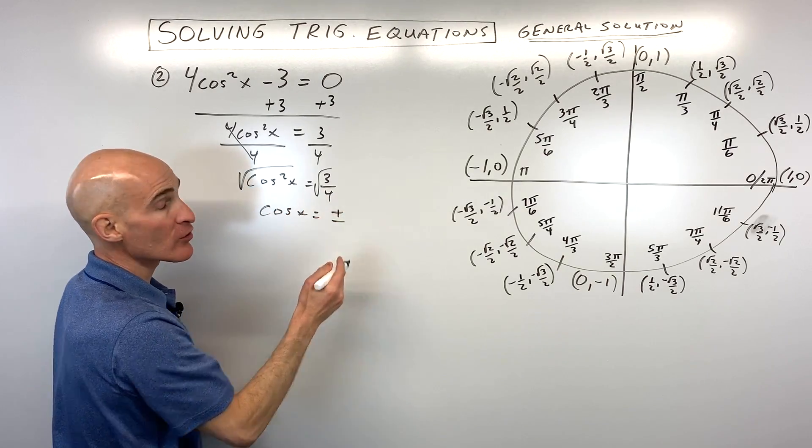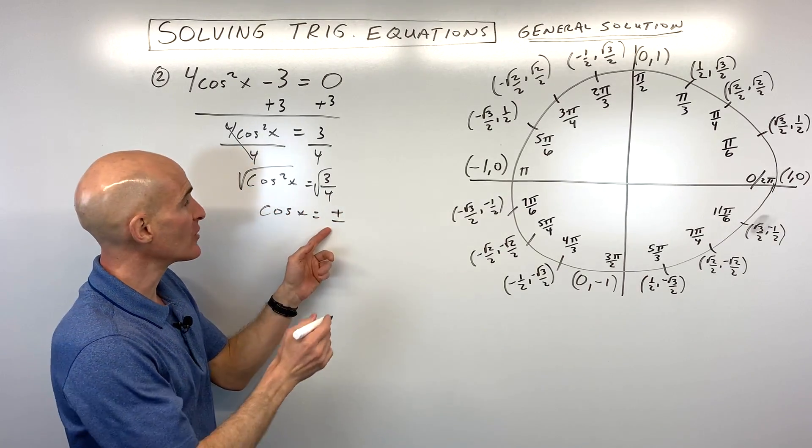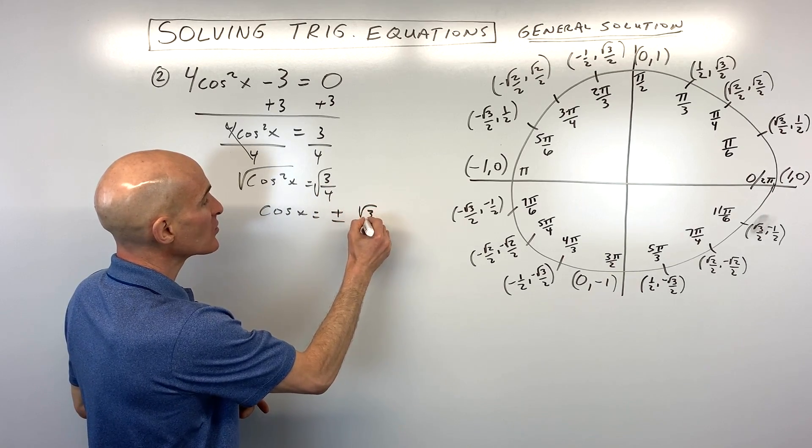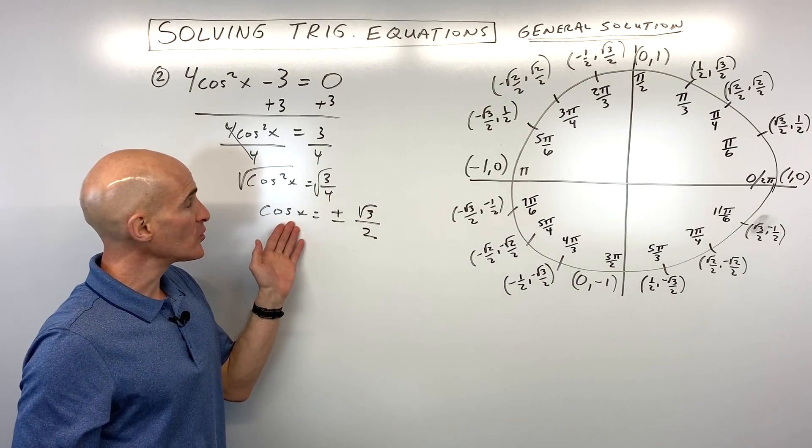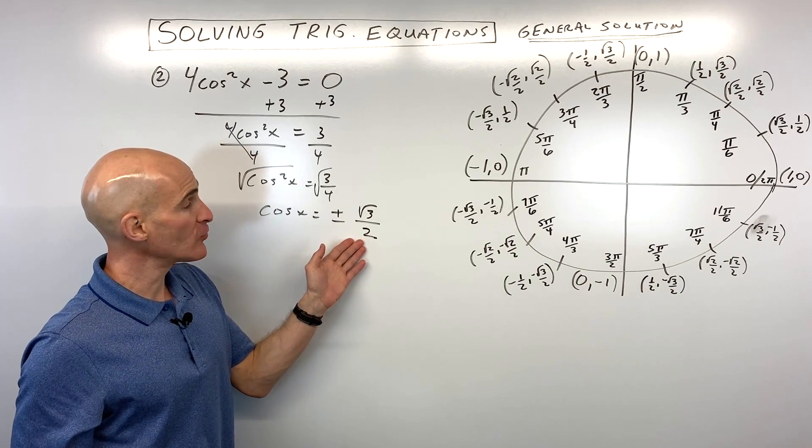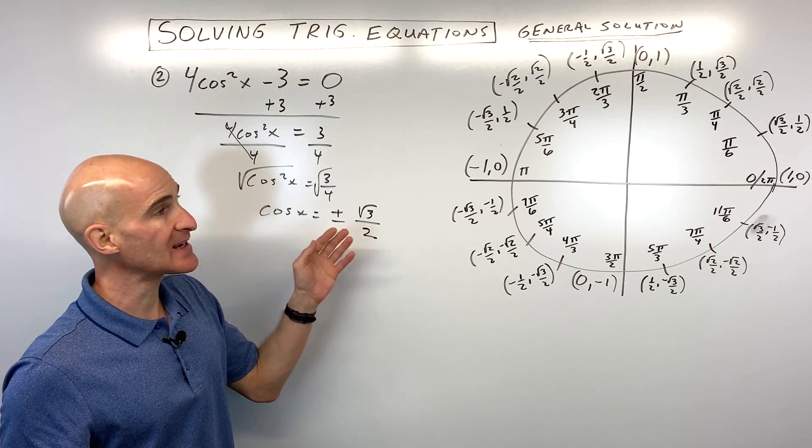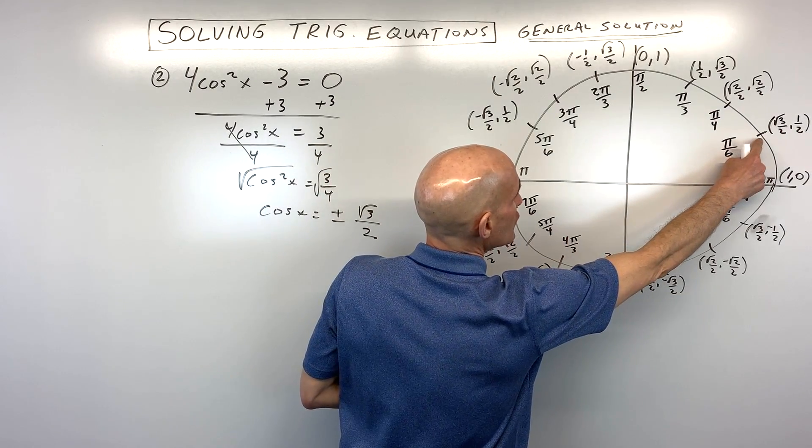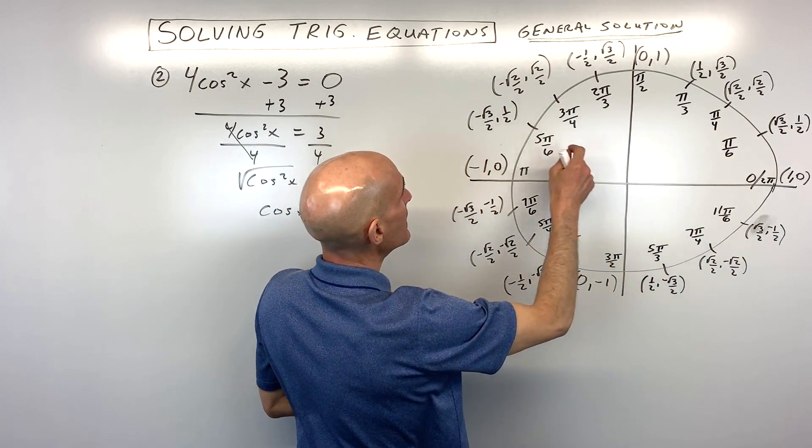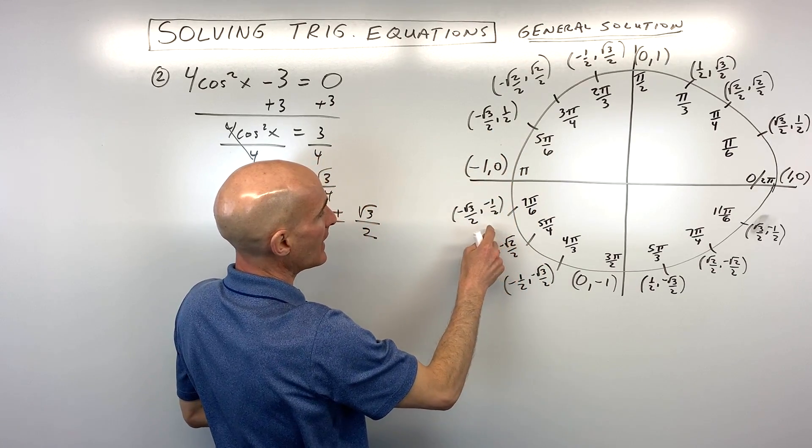And when we do that, when you take the square root of both sides, you get two answers, positive or negative. Square root of 3, we're going to leave as square root of 3. Square root of 4 is equal to 2. So now what we're doing is we're saying cosine of what angle equals positive root 3 over 2 or negative root 3 over 2. And remember, the cosine is the x-coordinate on the unit circle. So you can see it's going to be positive root 3 over 2 here and here, negative root 3 over 2 here and here.